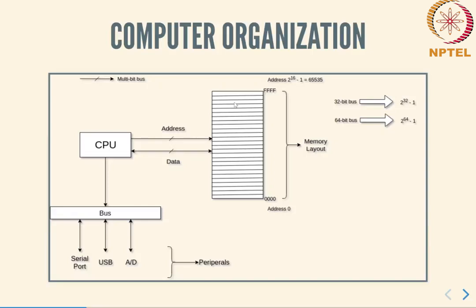The memory communicates with the CPU using a data bus, which is bi-directional — you can either write from the CPU into memory or read from memory back to the CPU. On the bottom left there is a block marked the bus, to which are connected the serial port, USB, A-to-D, and so on. Those are collectively known as peripherals and essentially enable communication with the outside world.